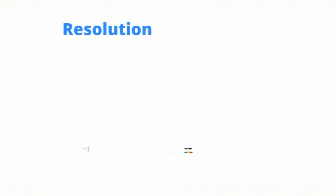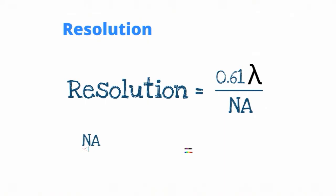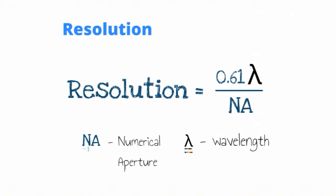Let's start talking about resolution. As mentioned, this is the ability of a microscope to distinguish objects separated by small distances. Since distance is a numerical value, there is a formula associated with resolution: d = 0.61 times lambda over NA, where NA is the numerical aperture and lambda is the wavelength. Now let's look at numerical aperture quickly.